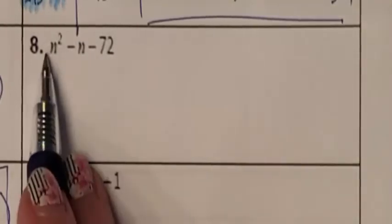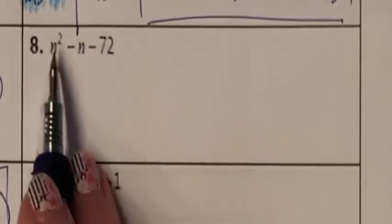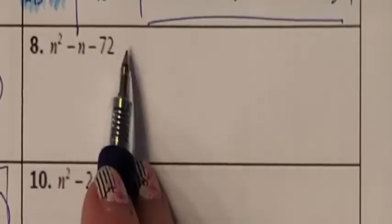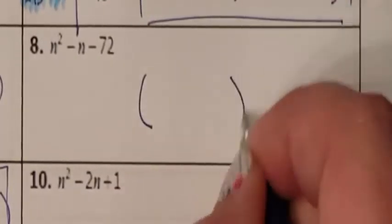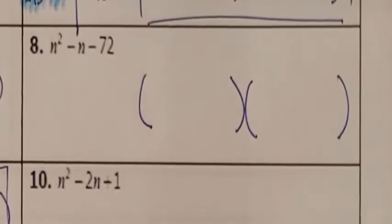Let's look at number 8: 1, negative 1, negative 72. There is no number GCF and no variable GCF, so my GCF is a 1. Because A is also 1, I can factor straight into parentheses.